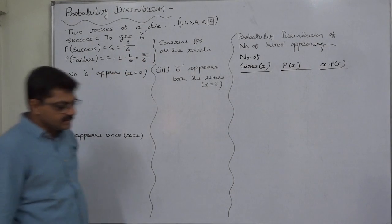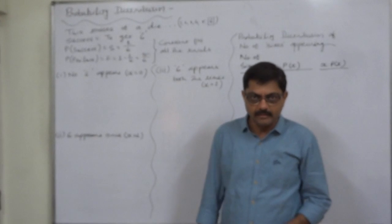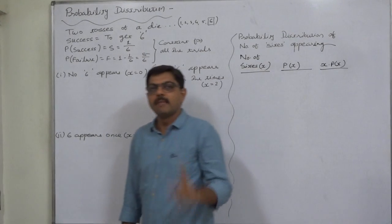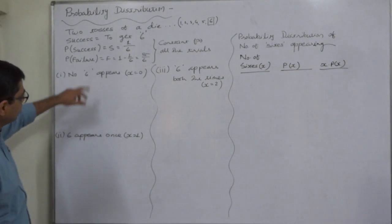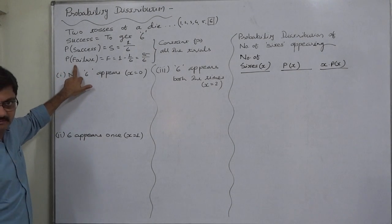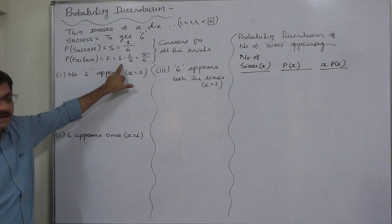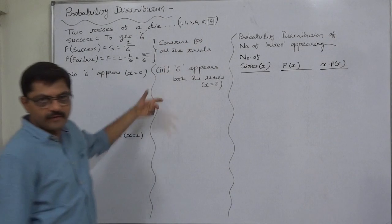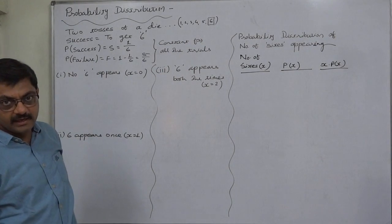Getting a six on tossing a die any number of times, the probability remains one by six every time — that is a constant probability. Similarly, the probability of not getting a six, that is failure, also remains constant, and that is five by six every time, since five outcomes (one, two, three, four, five) represent failure.